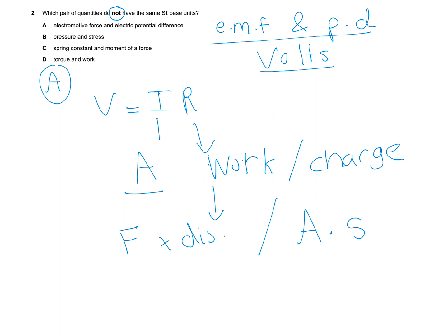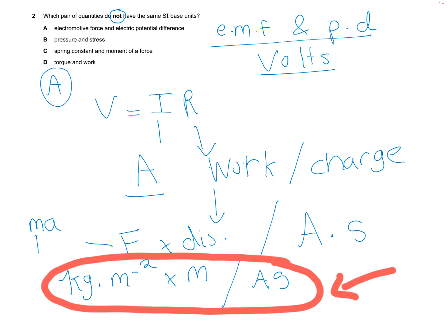Force is ma — mass multiplied by acceleration. Mass has SI base unit kilograms, acceleration is m s⁻², and distance is in meters. Working through this formula, we confirm that both EMF and potential difference share the same SI base units, so choice A is not the answer.